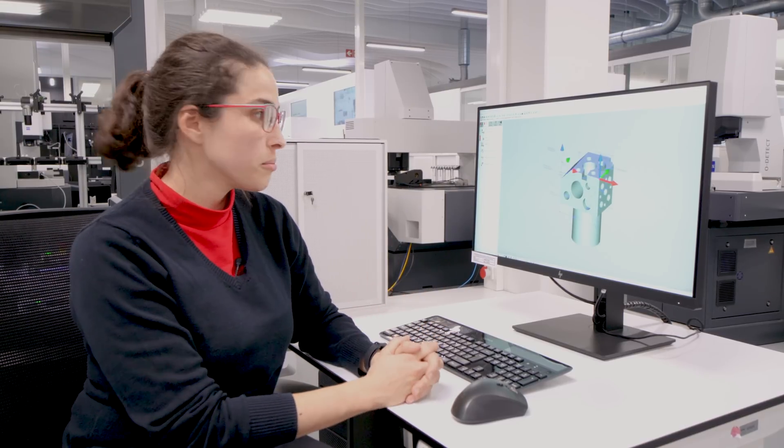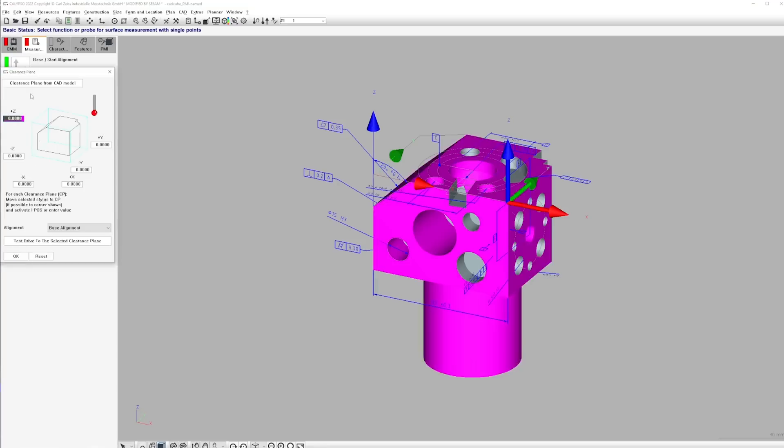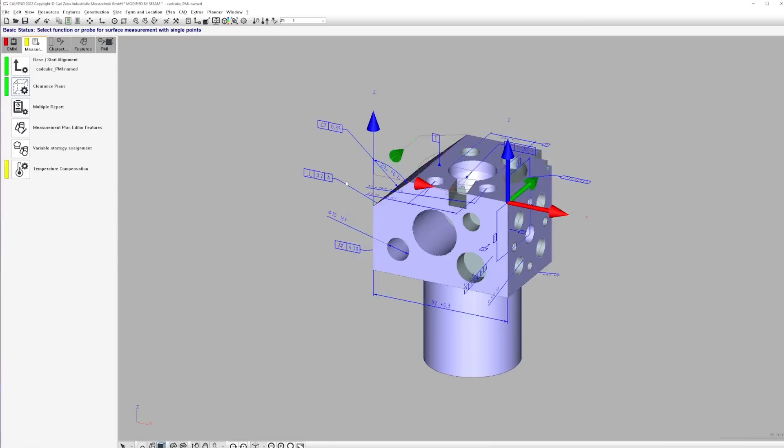Okay, the base alignment is now done. The next step is to create the safety cube. For this, we can create the planes from the CAD model and update that accordingly.